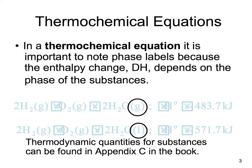It's very important to have the phase labels because the delta H depends on the phase of the substances. When you look in the back of your book at Appendix C, you should note that many substances have various phases — gas, liquid, solid, aqueous. So it is important that you look up the proper phase for each substance to get the proper delta H.